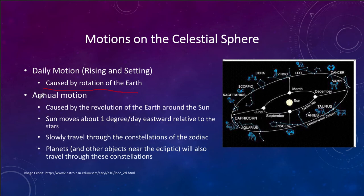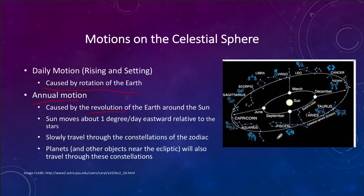There is also an annual motion, caused by the revolution of the Earth around the sun. Over the course of the year, every day the sun moves one degree relative to the stars. While the stars and their patterns remain fixed, the sun does not. The sun and the planets and other objects will also move slowly through the sky. Things like stars and galaxies, which are at much greater distances, stay at the same spot, so the pattern of the constellations remains the same — but where the sun is located will be different.